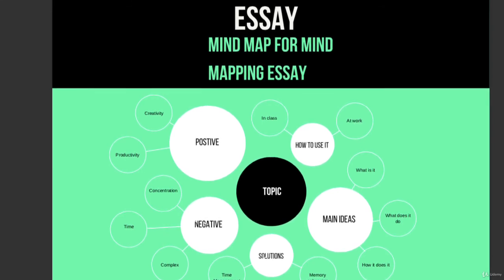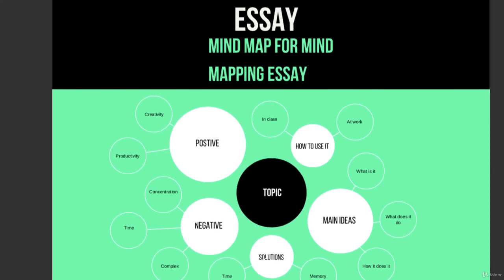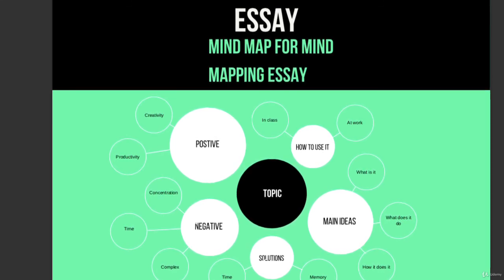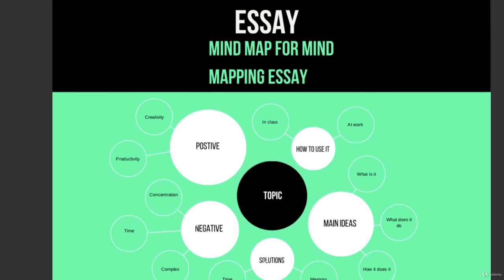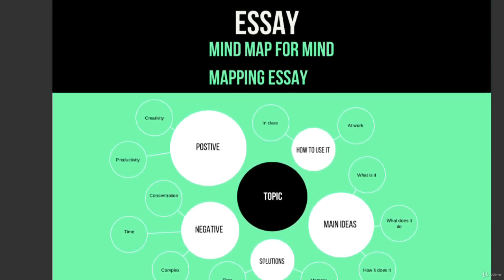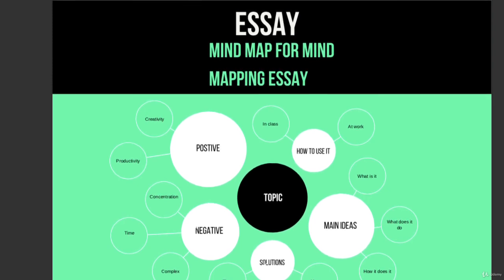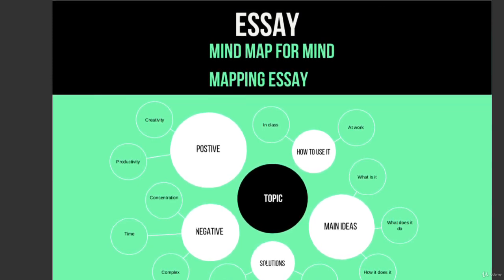And that's it — that's how you easily mind map your essay. Different topics have different branches and sub-branches, but you get the idea. You have the essay, then the topic, then all the different ideas behind your topic, what constitutes your topic, then all the sub-branches — what you need to know, what you need to do, and the ins and outs of each sub-branch.